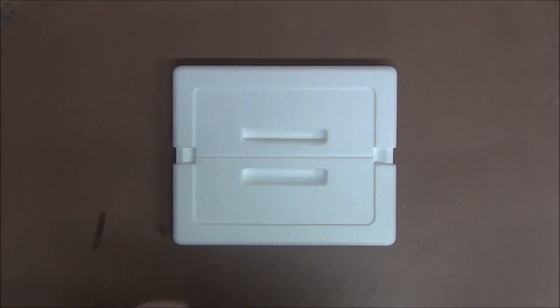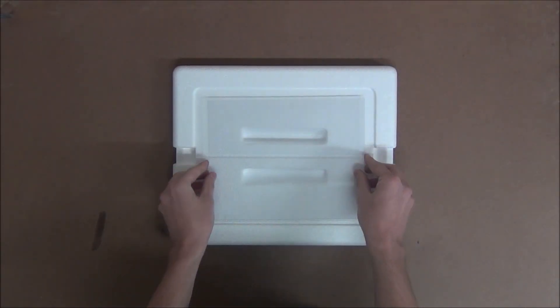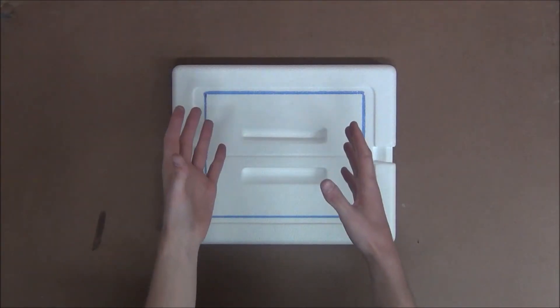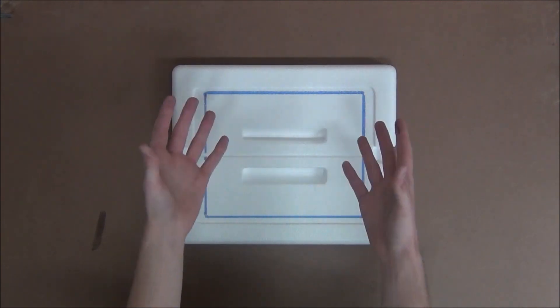So in order to do this, we'll begin by placing the Lexan in the center of the lid, right where we want the window to be. We'll then trace out the outline and cut it out using either a knife or, if you have it, an electric foam cutting hot wire.